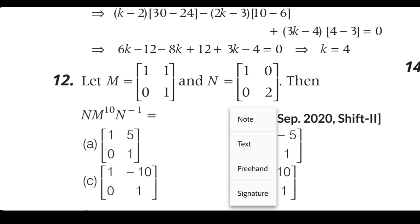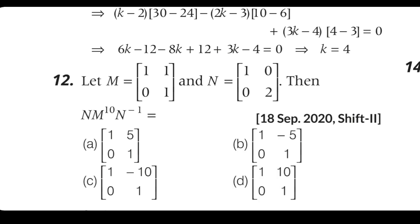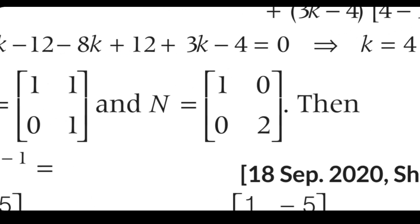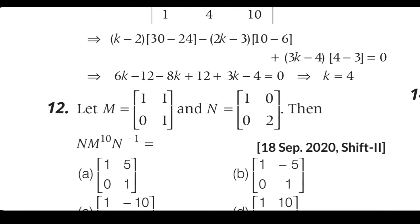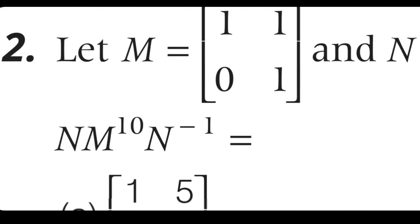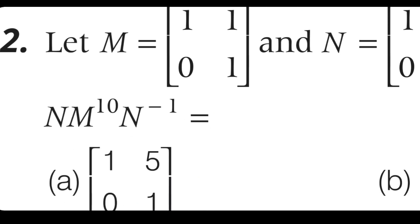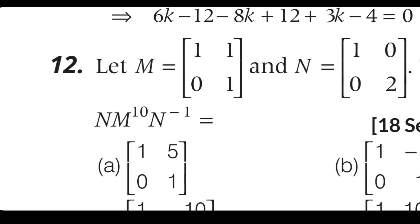Next question: the matrix M has options 1, 5, 0, 1 or 1, 5, minus y, 0, 1 or 1, minus 10, 0, 1 or 1, 0, 0, 1. Find M to the power 10. The answer: since the off-diagonal element is 5 and power is 10, we get 5 times 10 equals 50... wait, 10 divided cycles give 5. The answer is A: 1, 50, 0, 1.